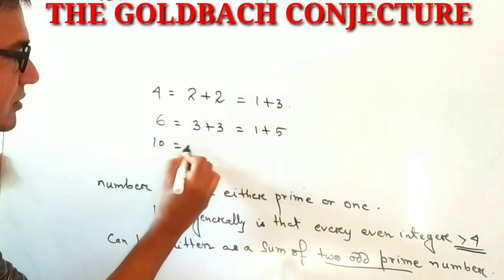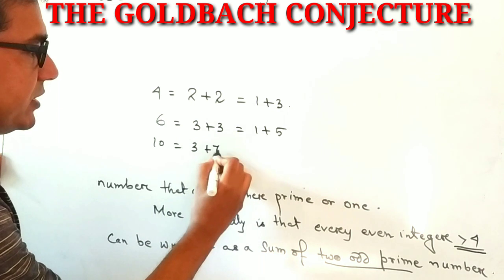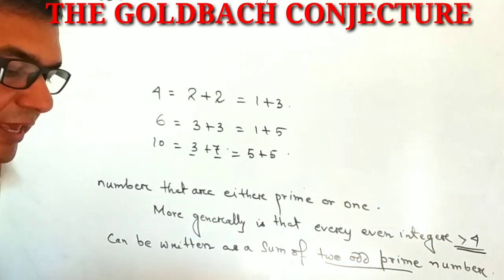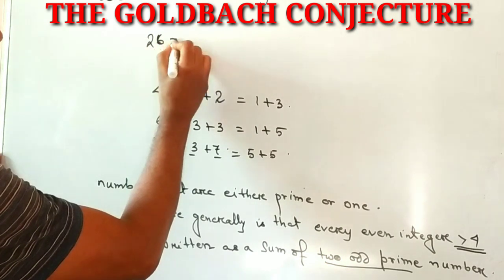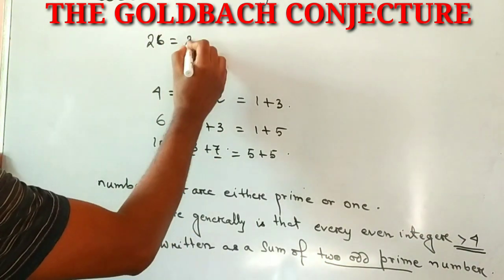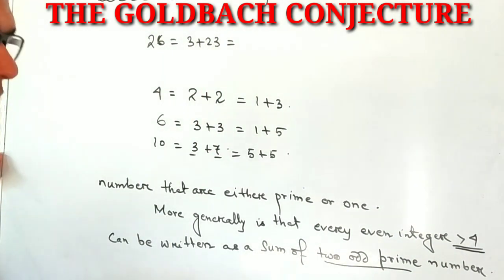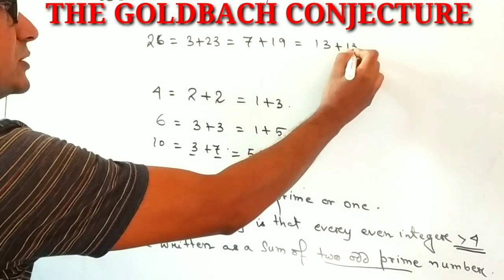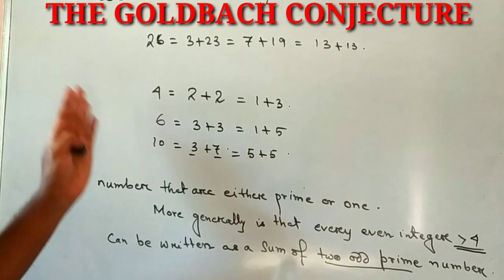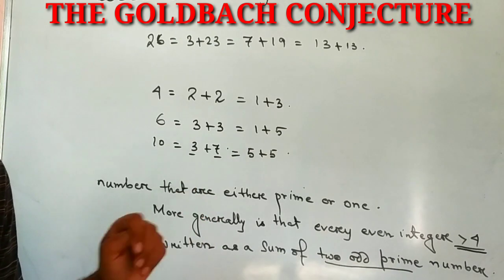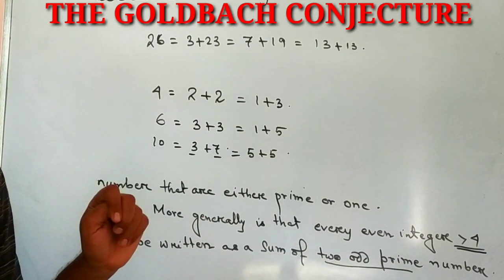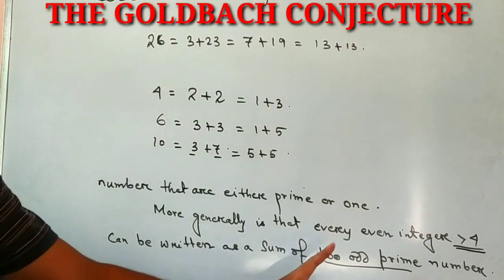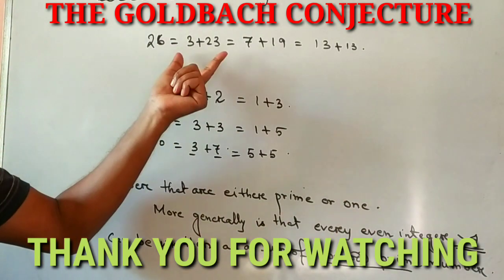If we take ten, then it is three plus seven — here three and seven are prime — or five plus five. And if we take twenty-six, this is three plus twenty-three, or seven plus nineteen, or thirteen plus thirteen. In a similar manner, we consider many even integers and we see that every even integer greater than four is the sum of two odd prime numbers.